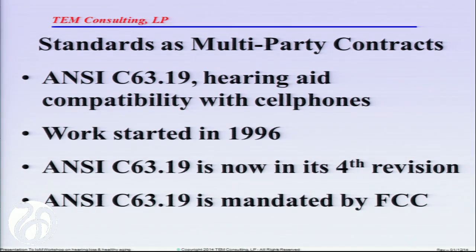With C6319, we were trying to get the hearing industry and the mobile phone industry together to solve a problem of interference and also make sure that T-coil and microphone mode work between the phones. Work started in 1996. We are now in the fourth revision. The standard is mandated by the FCC and recognized by the FDA. In general, we have been successful. Obviously we did not get it perfect out of the box — we are on version 4 and actively talking about what we might need in version 5. Also, in both industries, technology has changed.